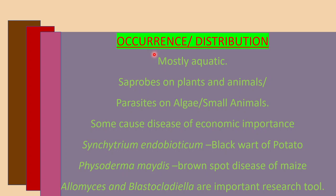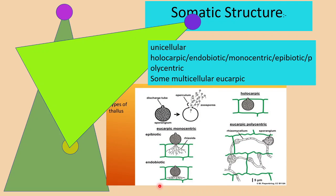Members of class Chytridiomycetes are mostly aquatic, meaning they are found in water. They can be saprophytes, growing on dead plant materials or dead animals. Besides, there are some members which grow on algae or on small animals as parasites. There are also a few members responsible for serious plant diseases in cultivated crops — like Synchytrium endobioticum, which causes blackwart of potato, and Physoderma maydis, which is responsible for brown spot disease of maize. Allomyces and Blastocladiella are two members frequently used in various research purposes.